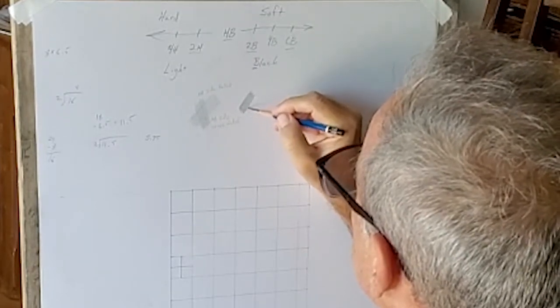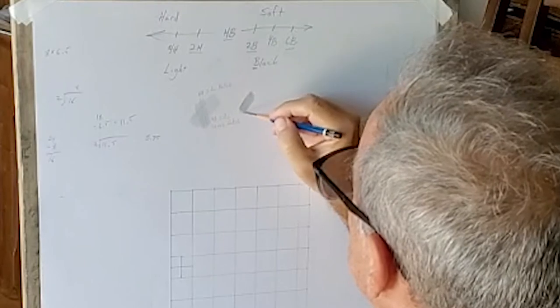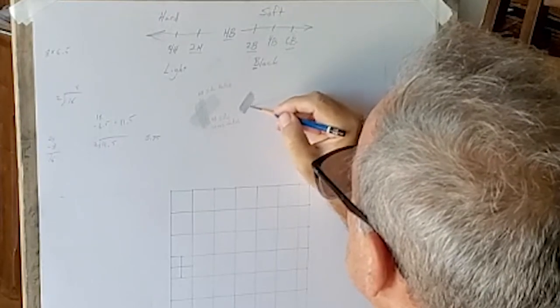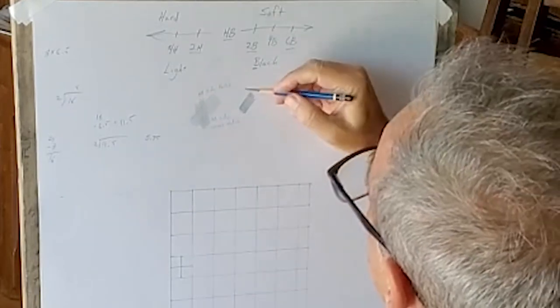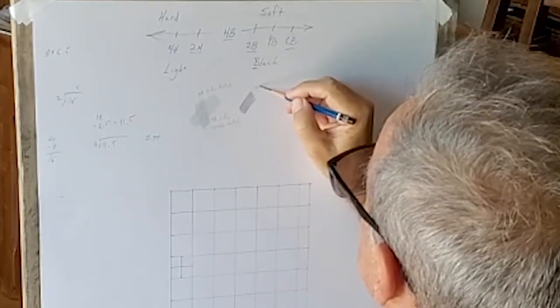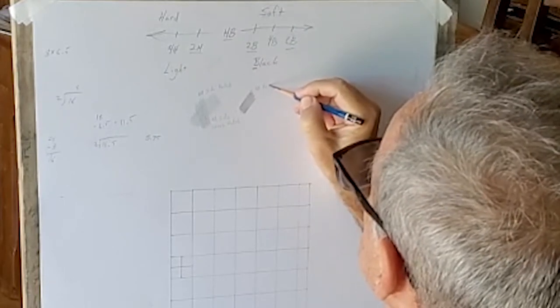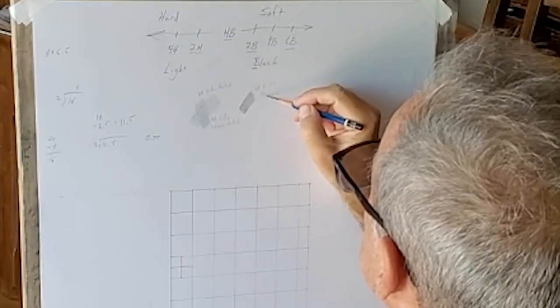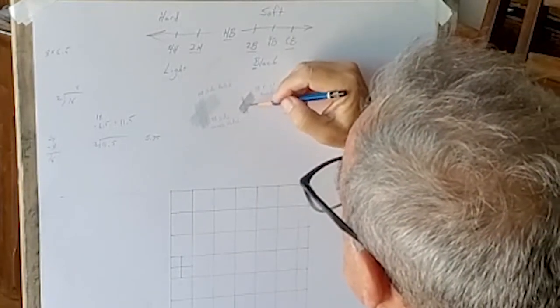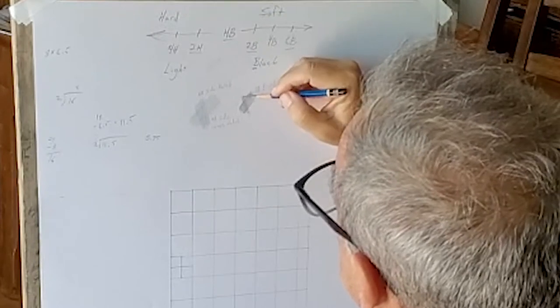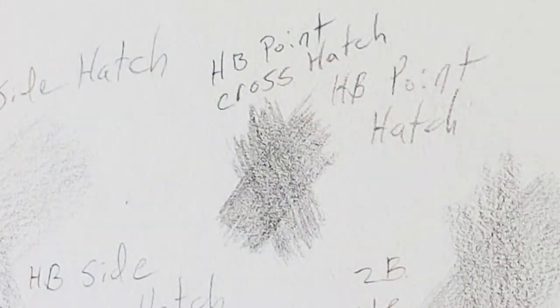Now why the point is darker is because you're working out that grain, the texture, the tooth of the paper. We've talked about before. So that's HB point hatch. And then HB point crosshatch.